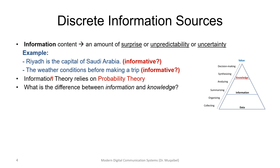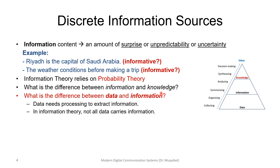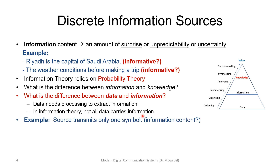Information theory relies on probability theory. We ask: what is the difference between information and knowledge, and between data and information? On the data-information-knowledge pyramid, we collect data, then organize and process it to extract information, gain knowledge, and create value. Data needs processing to extract information. Data could be repetitions — we need to extract the information from the data. In information theory, not all data carries information; it could be pure repetition.